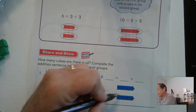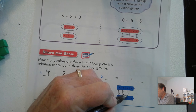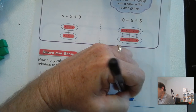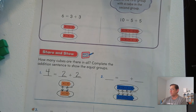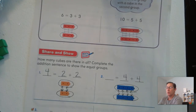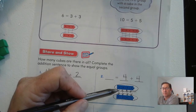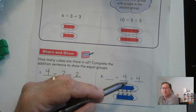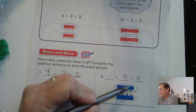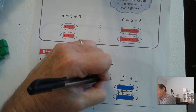How about this one? Join them by drawing a line, then circle your 2 equal groups. I have 1, 2, 3, 4 in each group. I can count by 2s or count 1 through 8 — or just know that 4 plus 4 is 8.